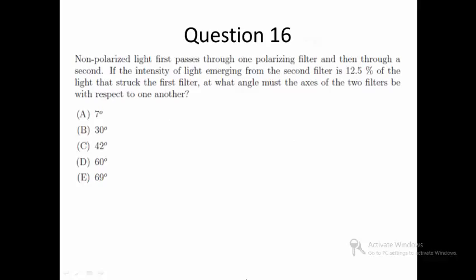Question 16. Non-polarized light first passes through one polarizing filter and then through a second. If the intensity of light emerging from the second filter is 12.5% of the light that struck the first filter, at what angle must the axis of the two filters be with respect to one another?